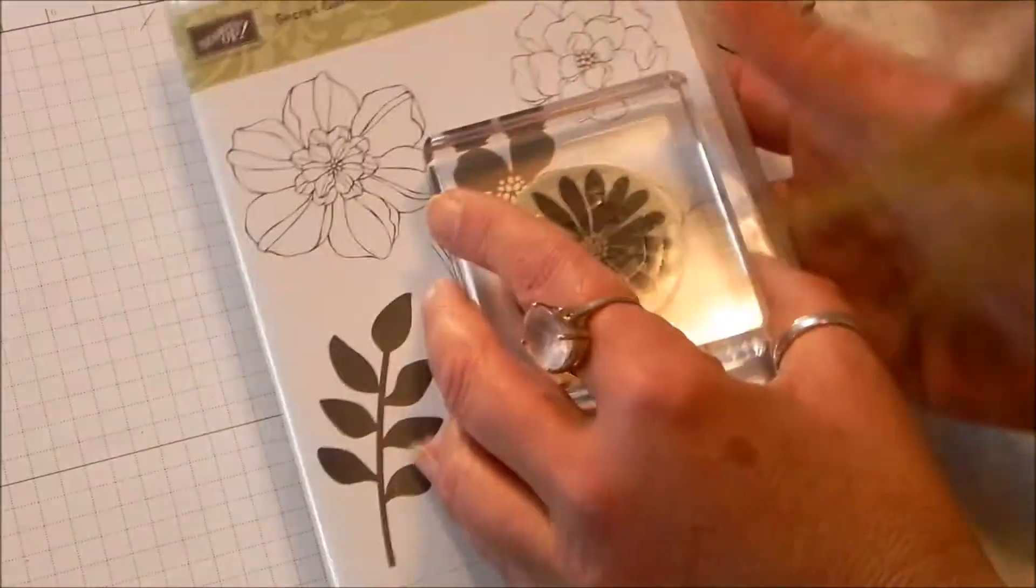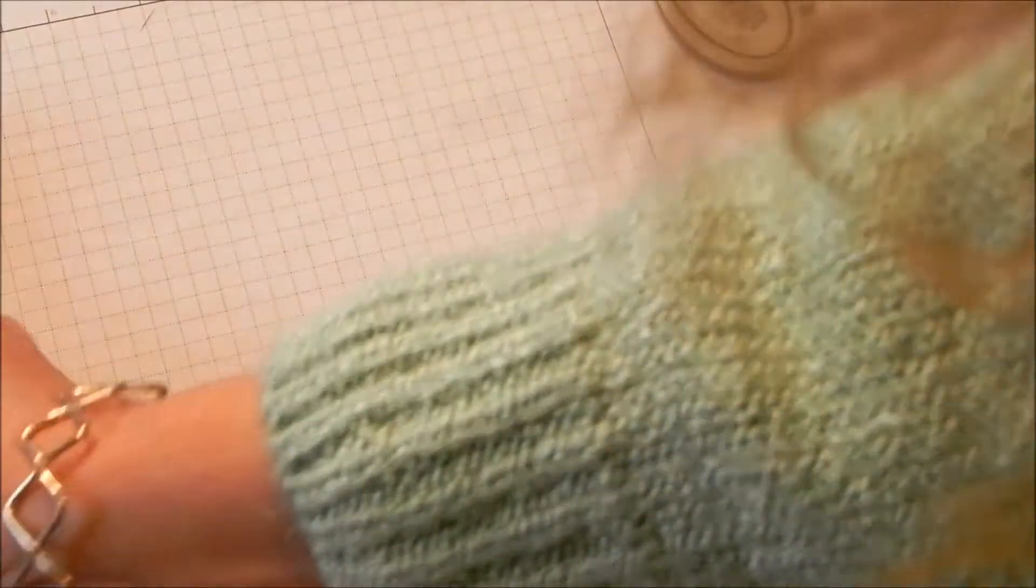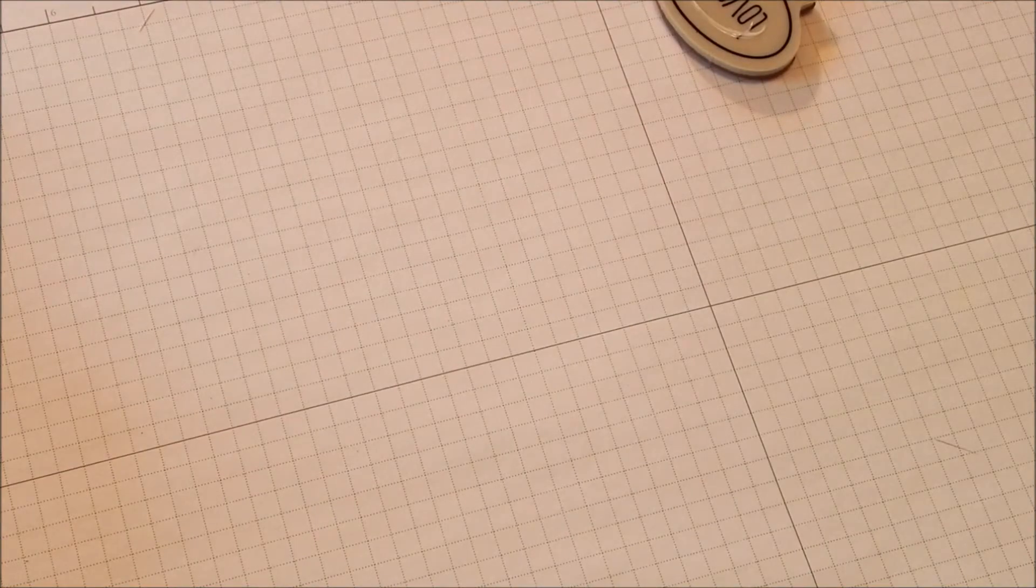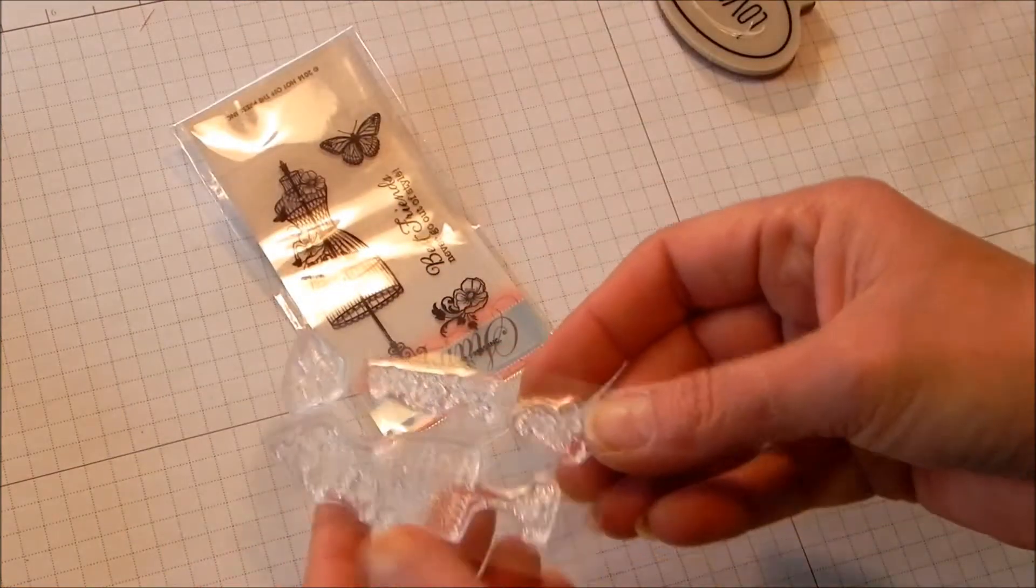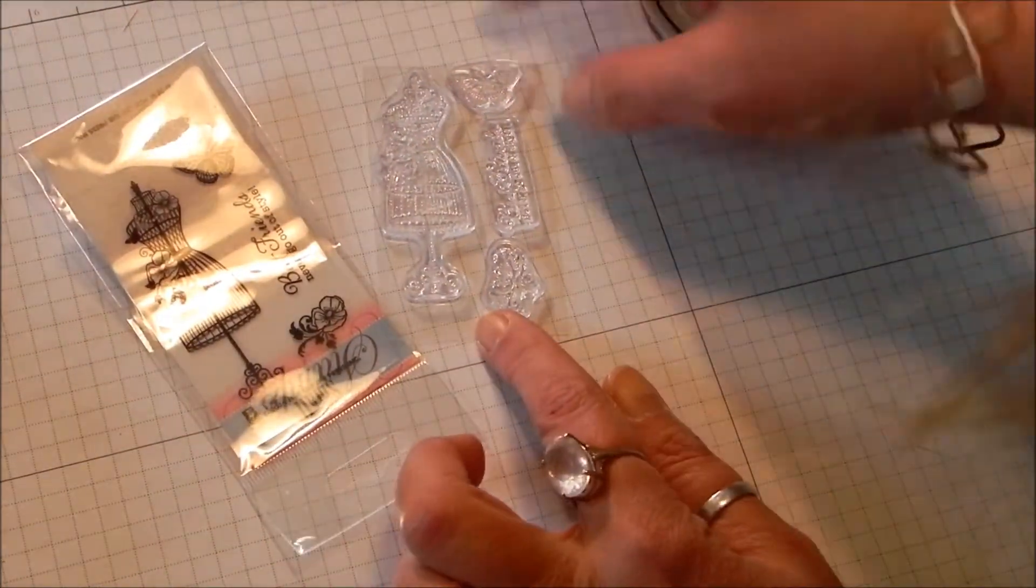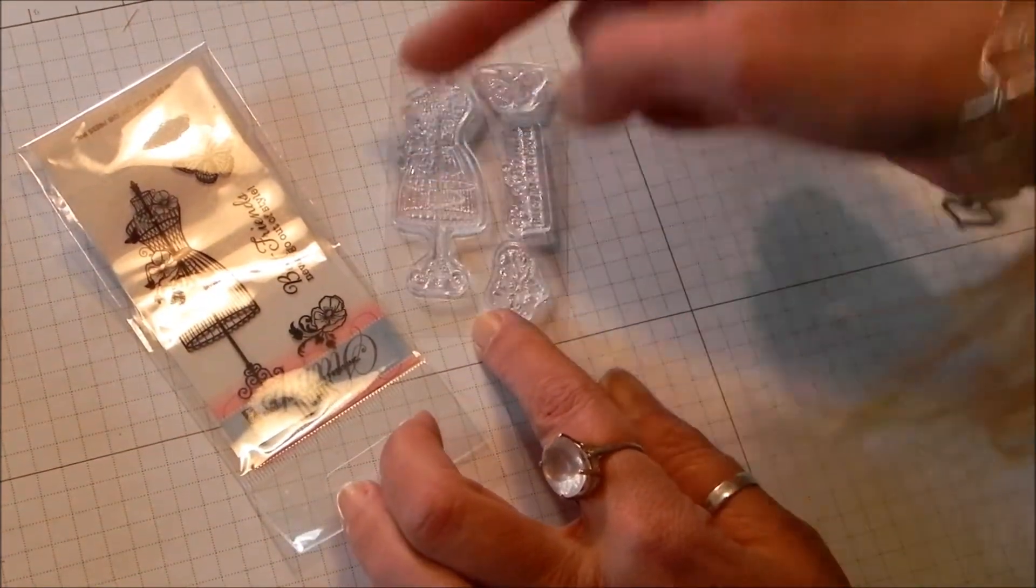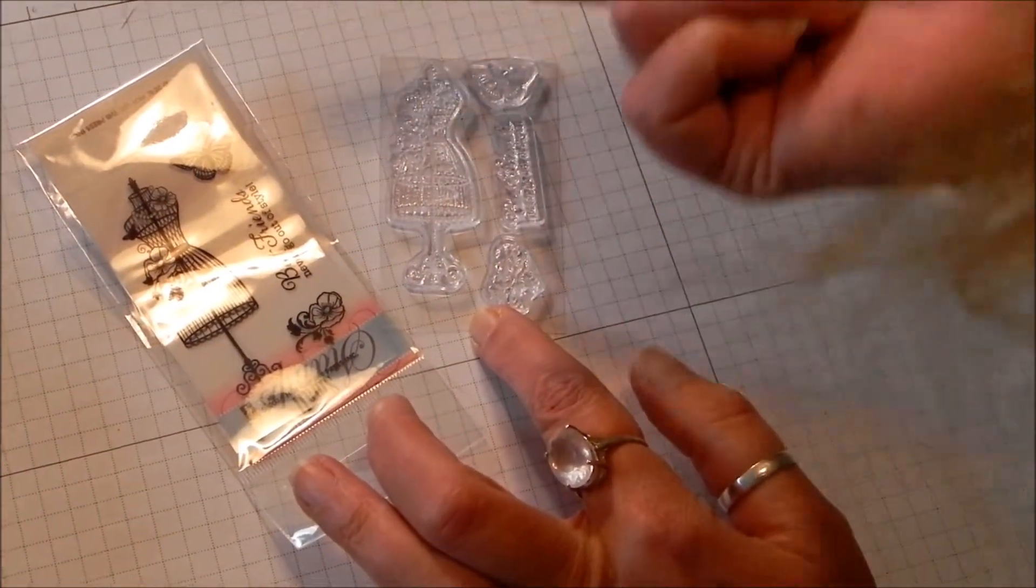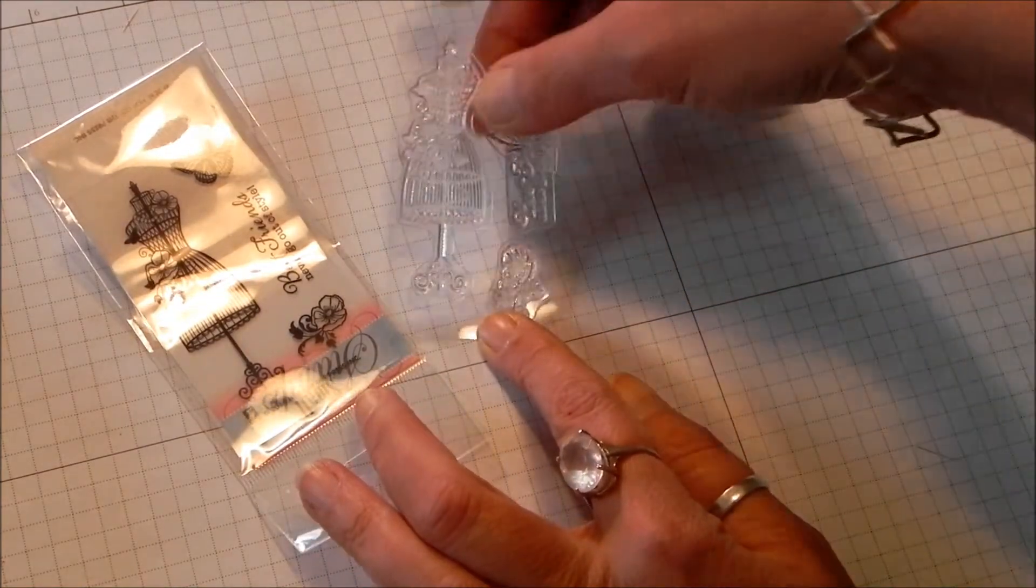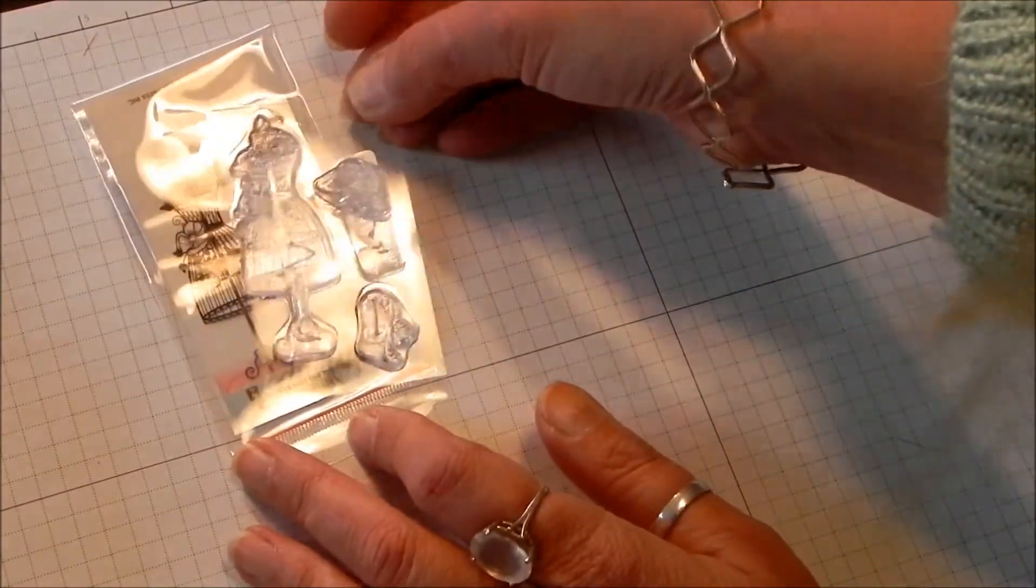Now, even if you're not a Stampin' Up person, if you've got clear acrylic stamps, especially the small ones, these are from Hot Off The Press. I put glue on there. And when you know it's ready, when you can put your finger down and you're not picking up glue. So I've done that with these as well.